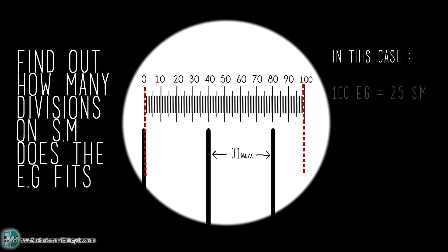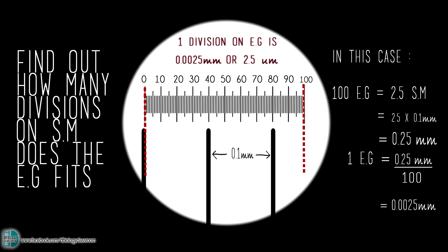In my example, the total length of the eyepiece graticule fits into 2.5 divisions on the stage micrometer. Since each division on the stage micrometer is 0.1mm, 100 divisions on the eyepiece graticule is equal to 0.25mm. Divide this value by 100, you will find out that each division on the eyepiece graticule is equal to 0.0025mm or 2.5 micrometers.